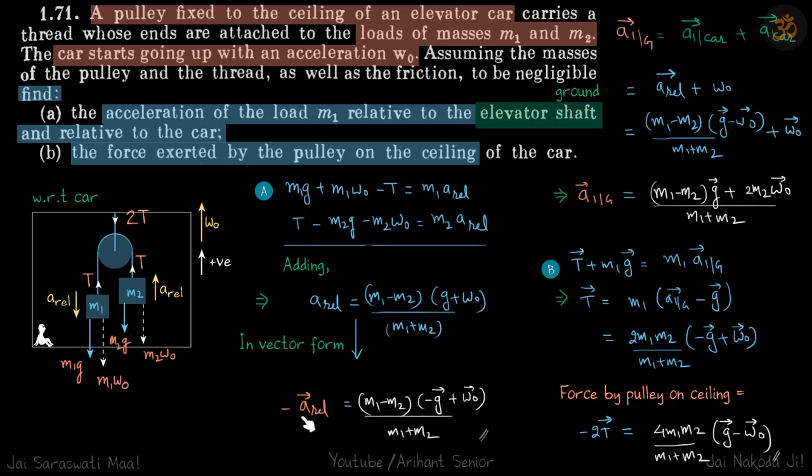So here in vector form it will be minus A relative. And G is downwards again, so with our assumption, G will be minus G vector. And W naught is upwards, so it will be simply plus W naught. So this is the A relative.